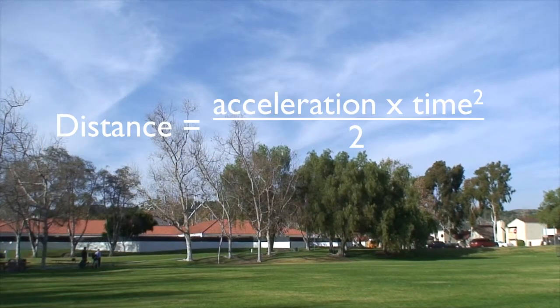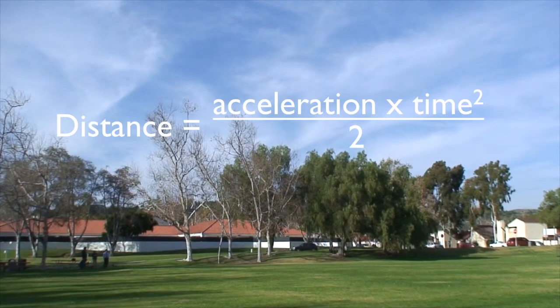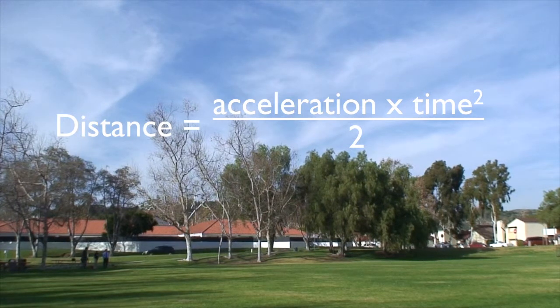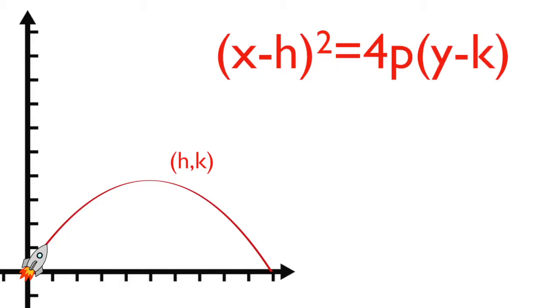With this information and another equation, distance equals half acceleration times time squared, we can find the vertex of the parabola. Then we can plug in a point to solve for p.